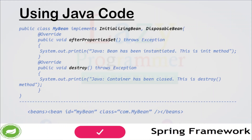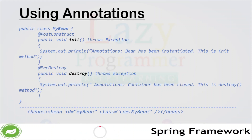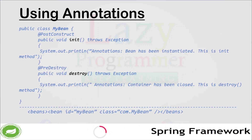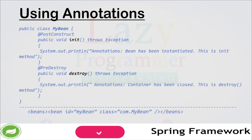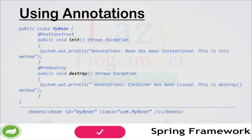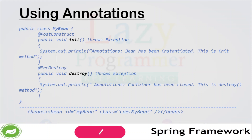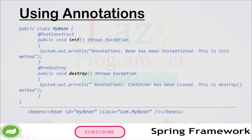The third way is using annotations. Here we neither need to add any additional configuration in XML nor implement any interfaces. Using this approach we can straightaway use two annotations: @PostConstruct to define the custom init method, and @PreDestroy to define the custom destroy method. The rest of the implementation remains the same — any method annotated with @PostConstruct will act as a custom init method.